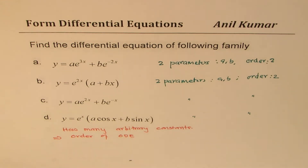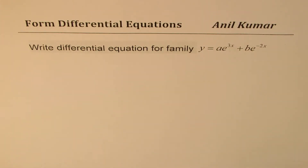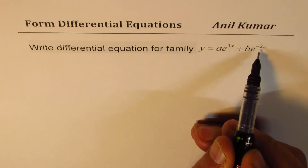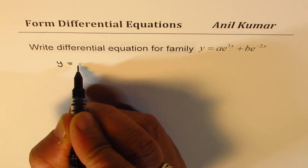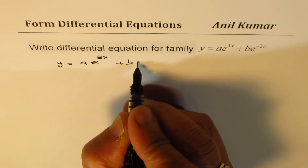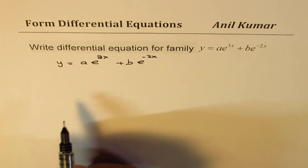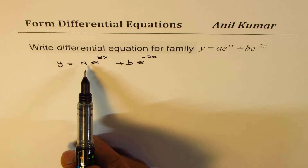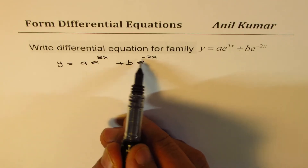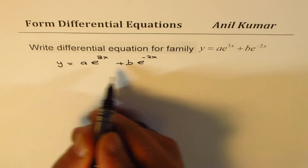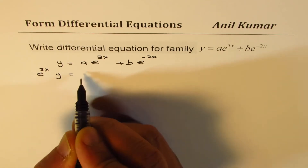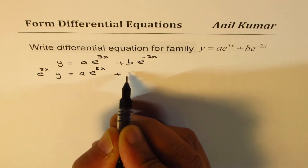The first example: write a differential equation for the family y = ae^(3x) + be^(-2x). If you take the derivative directly, you won't be able to eliminate a and b easily. However, if we multiply everything by e^(2x), we get e^(2x)·y = ae^(5x) + b.